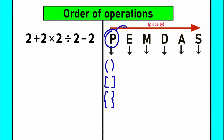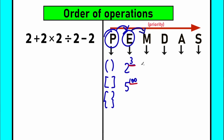After parentheses we have E — exponents, meaning basic powers. Don't be scared: for example, 2 to the power of 3 or 5 to the power of 100. We raise these before moving forward. After exponents, the next step is the multiplication and division group. M stands for multiplication, D stands for division, and I mention them together because they form one common group.